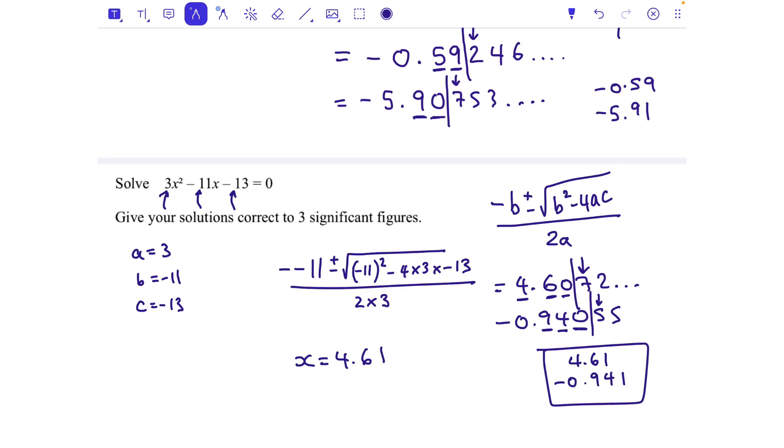When x is 4.61 that quadratic will equal zero, and when x is minus 0.941 that quadratic will equal zero, which means we know that it's the two places where it comes down, crosses the x-axis, and goes back up. And out of interest, the y-intercept there is minus 13 because of that number there.